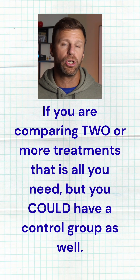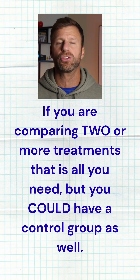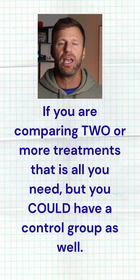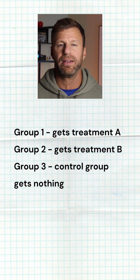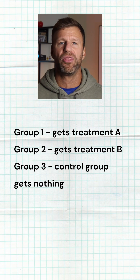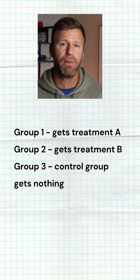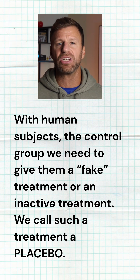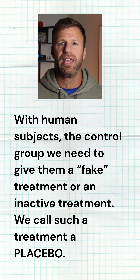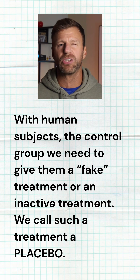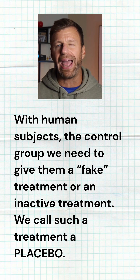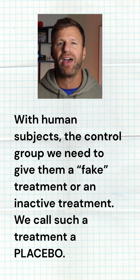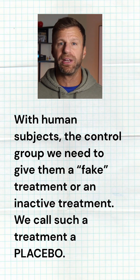Now, one of those groups could also be considered a control group. A control group is a group that gets nothing — no active treatment. If you're working with people, you might want that control group to get a placebo to control for the placebo effect. A placebo is essentially a fake pill with no active ingredient, or a fake treatment with no active ingredient. We actually cannot prevent the placebo effect, but we can make sure that everybody experiences it.